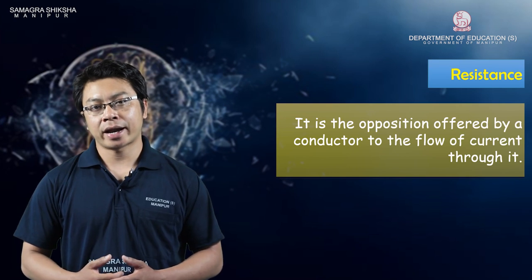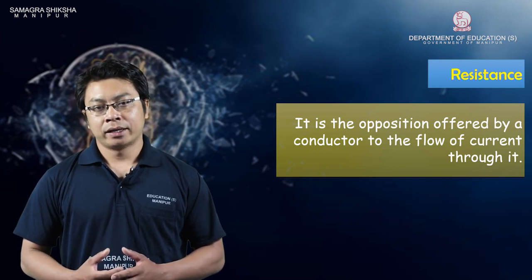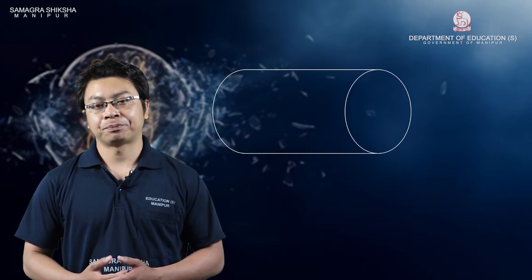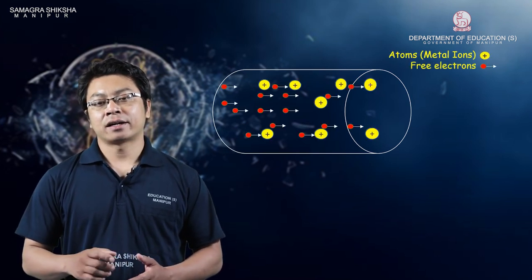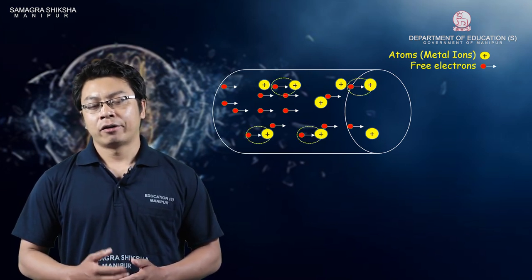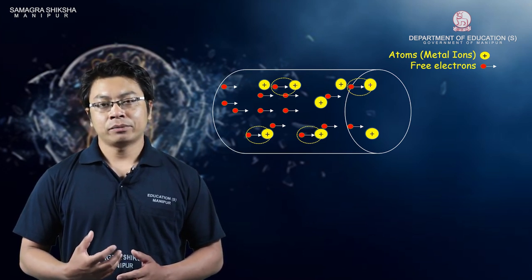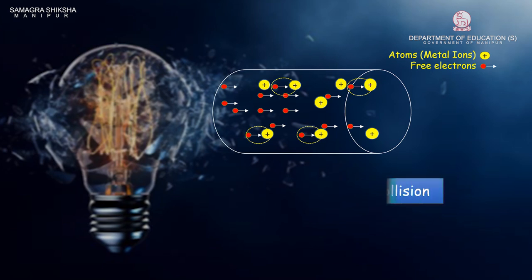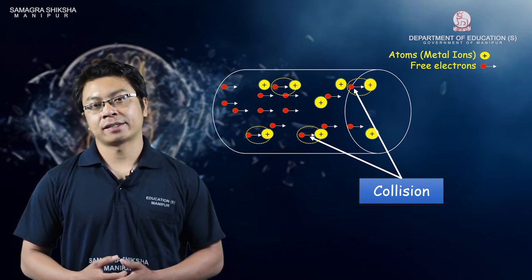What is resistance? Atoms are almost fixed, and free electrons can be seen moving in a conductor. The figures of conductors represent circles; atoms represent circles, and the red represents free electrons. The conductor's atoms are collided by the free electrons, creating opposition to the flow.